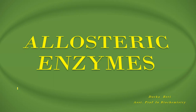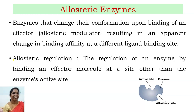Let's learn about allosteric enzymes. Allosteric enzymes are those that change their conformation upon binding to an effector, resulting in a change in the binding affinity at a different ligand binding site. Allosteric regulation means regulation of an enzyme by binding of an effector molecule at a site other than the active site.